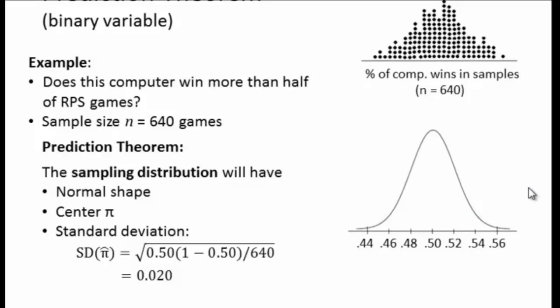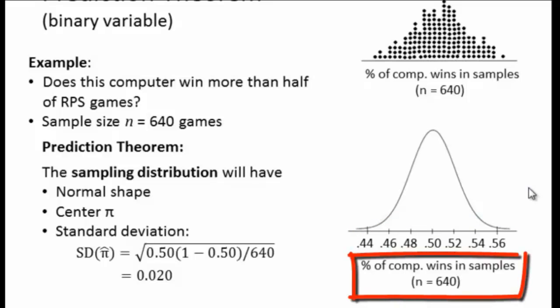Before we do that, let me make a point. You need to have a label on these numbers. Each dot in the dot plot represents the percentage of computer wins in a particular sample. Also make sure you let people know that the sample size was 640, because different sample sizes are going to lead to different sampling distributions.